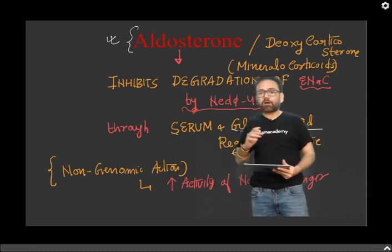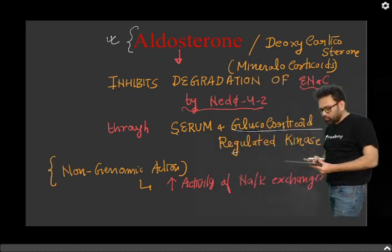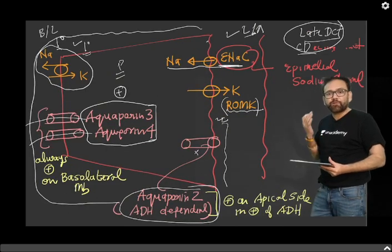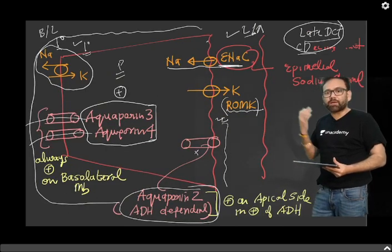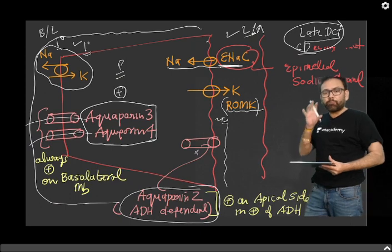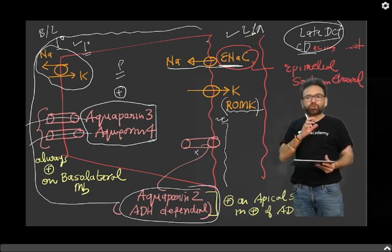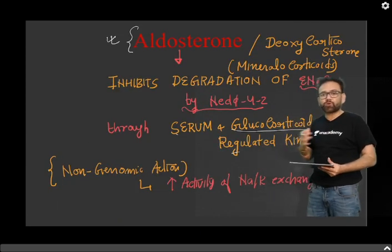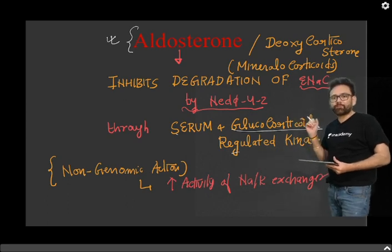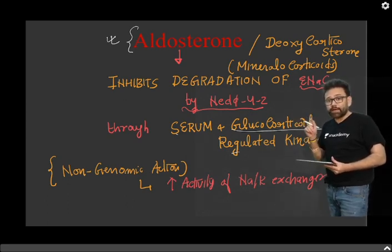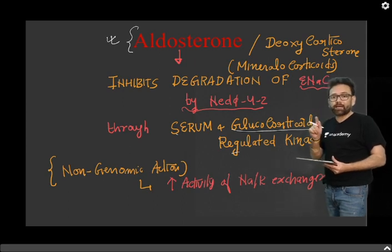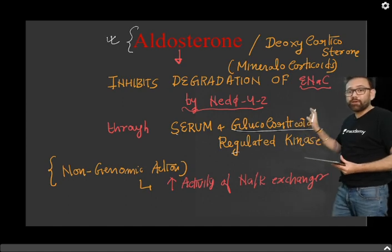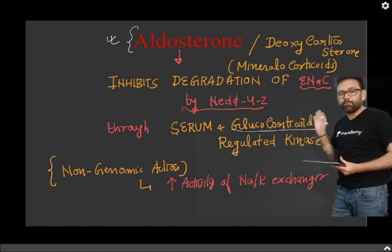You can see that functioning of ENAC is more improved, so more sodium can be reabsorbed in this process, and more potassium can be secreted by ROMK. So the main functioning of aldosterone is: one, to reabsorb sodium through ENAC — it prevents degradation of ENAC through SGK, serum and glucocorticoid regulated kinase. This is clearly the genomic action.